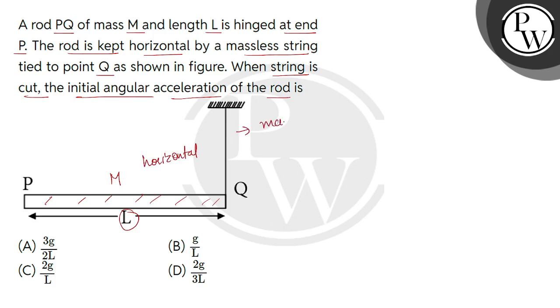Now, we have to focus on this thing that the string is massless and Q point is tied to the rod. Now, when we cut the string, we have to tell how much angular acceleration it will produce in the rod. A definite thing is that when we cut the string, this rod's end Q will be toppled. So, let's assume that the angular acceleration will produce alpha.